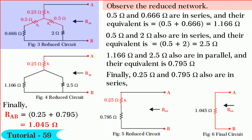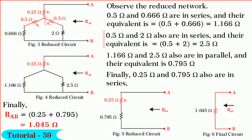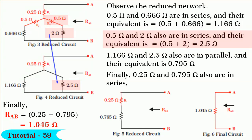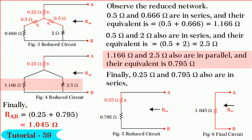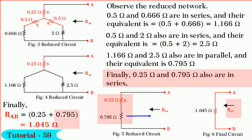Observe the reduced network. 0.5 ohm and 0.666 ohm are in series, and their equivalent is 1.166 ohm. And 0.5 ohm and 2 ohm are in series, and their equivalent is 2.5 ohm. Further, 1.166 ohm and 2.5 ohm are in parallel, and their equivalent is 0.795 ohm. Finally, 0.25 ohm and 0.795 ohm are in series, and hence RAB is equal to 1.045 ohm.